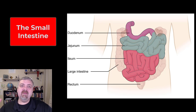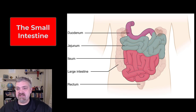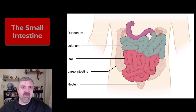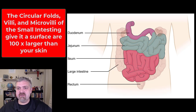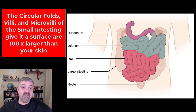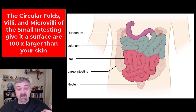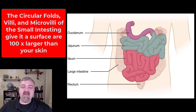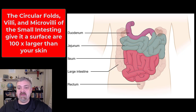Hey everybody, Dr. O. Let's talk about the small intestine. The first thing I think about the small intestine is just a shocking surface area. It's about 200 square meters. Imagine the surface area inside your small intestine alone would be 100 times the surface area of your skin. So how does it have this massive surface area? I'll show you some images in a little bit.